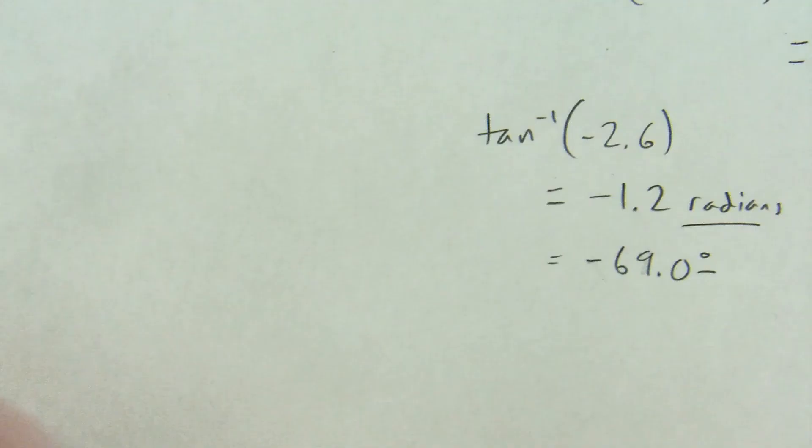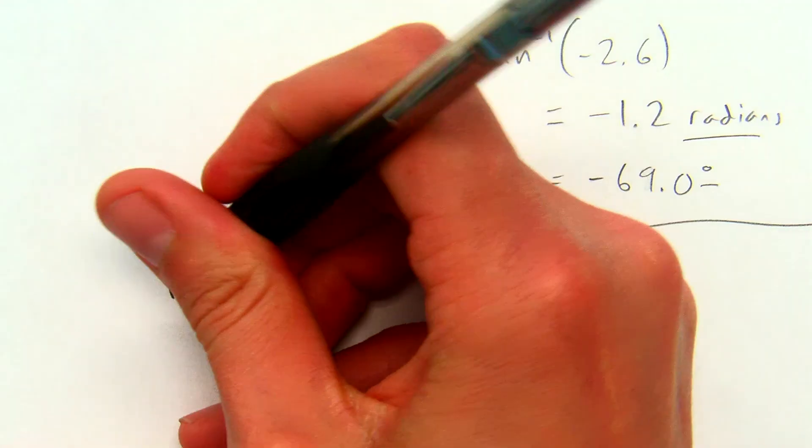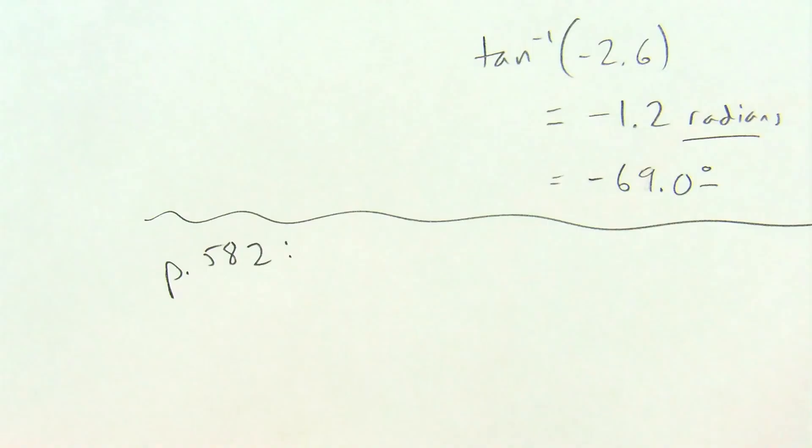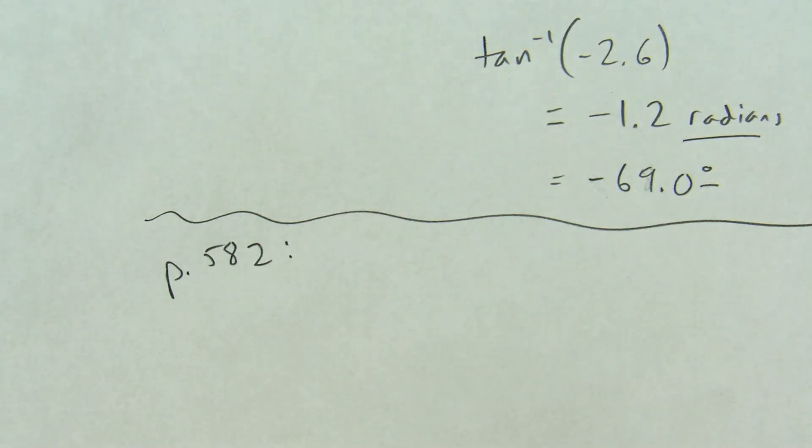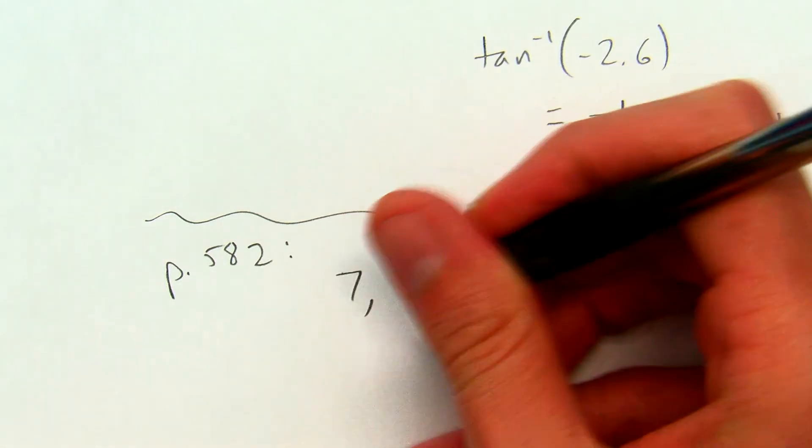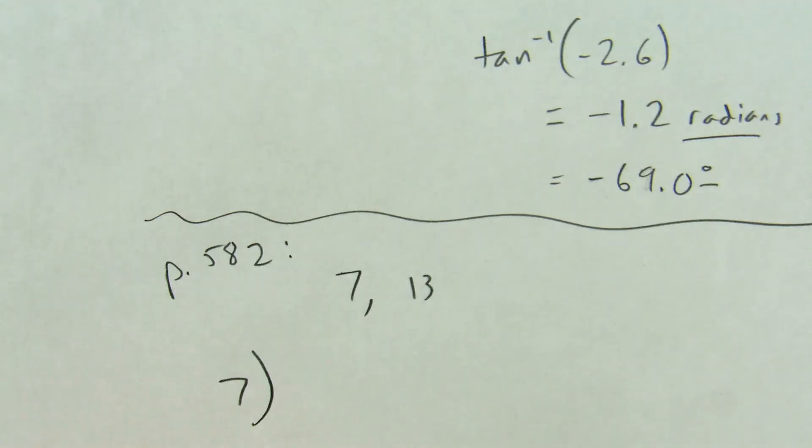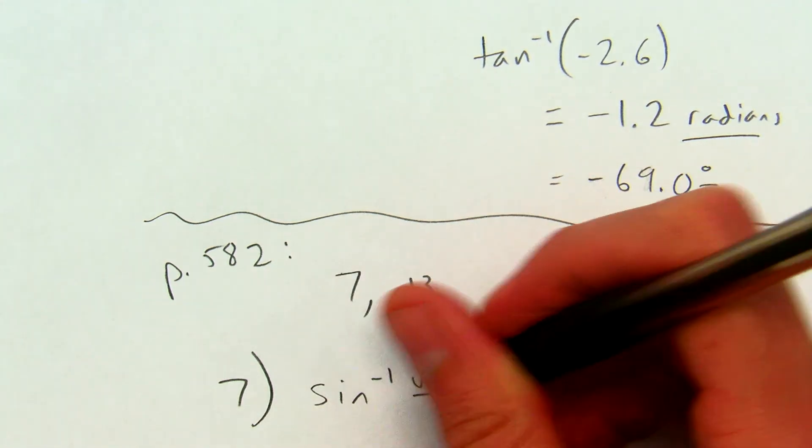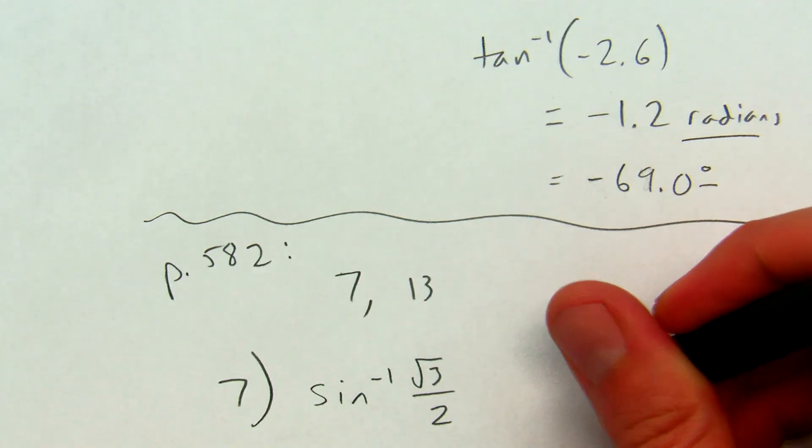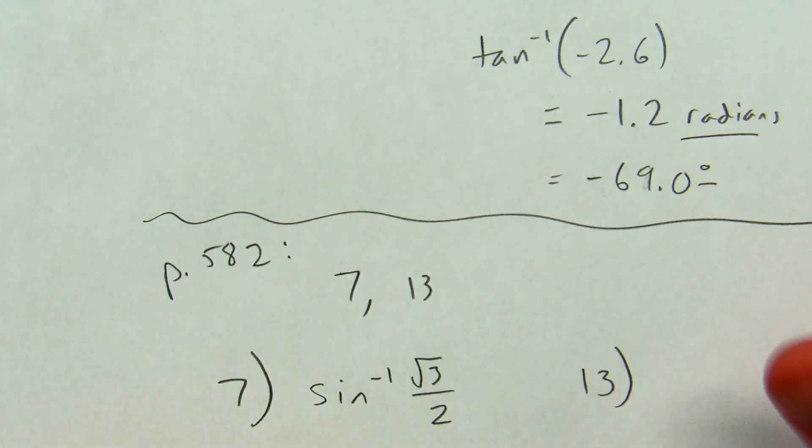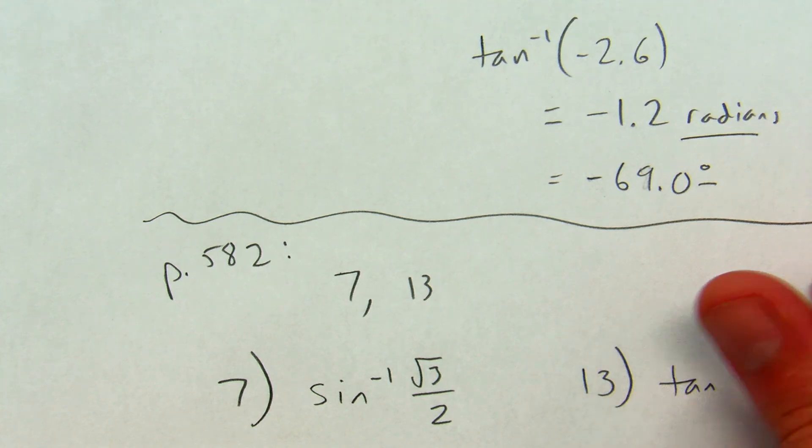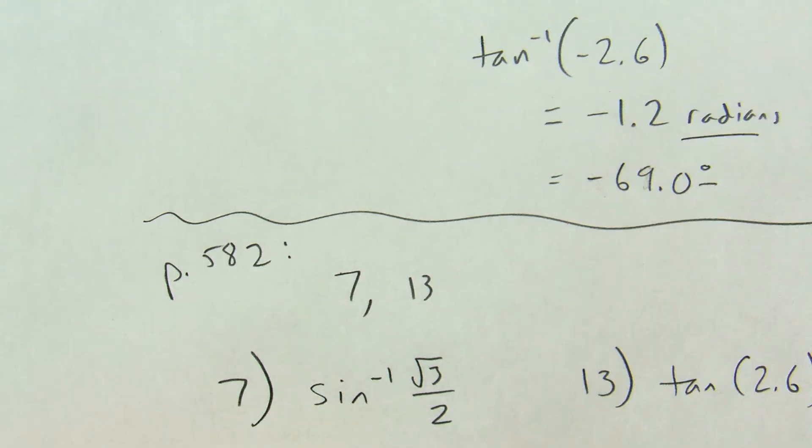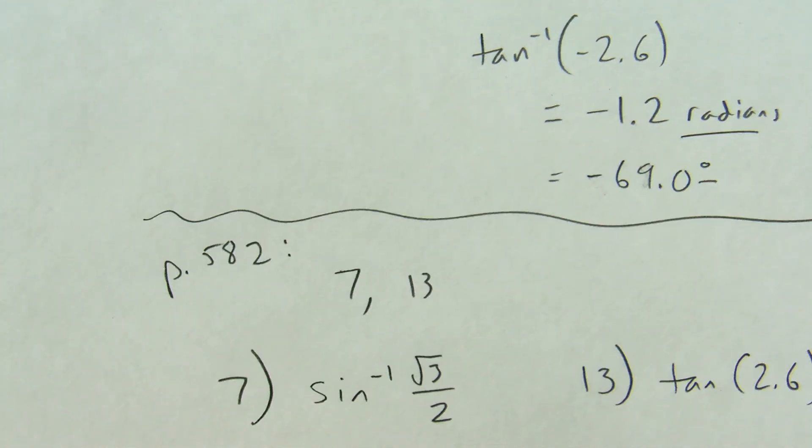Alright guys. Your problems for homework are page 582, numbers, let me find it here, 7 and 13. Here's number 7. You can stop the video now if you already have this, if you have your book with you. Number 7 is asking you to evaluate inverse sine of root 3 over 2, and number 13 is asking you to use your calculator to evaluate inverse tangent of 2.6. Oh, I didn't realize that when I picked negative 2.6. Oh wow. Alright, I'll see you in class tomorrow. Bye.